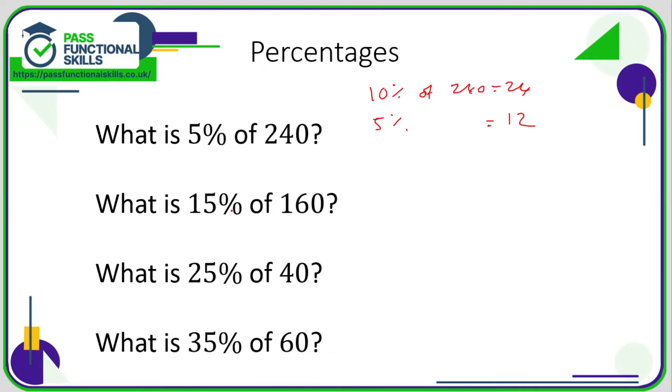For any multiple of 5%, we're going to break it down into blocks of 10% and 5%. Well, 15% is 10% plus 5%. 10% of 160 is 16, so 5% is going to be half of 16, which is 8. Therefore, 15% is going to be 16 plus 8, which is 24.